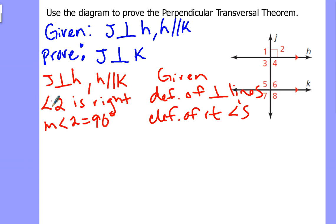It's because H and K are parallel. So what does that mean? It means that corresponding or alternate interior or alternate exterior angles are congruent to one another. So what this tells me is that angle 2 is congruent to its corresponding angle, angle 6. Corresponding angles theorem.